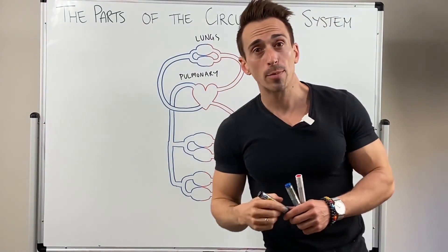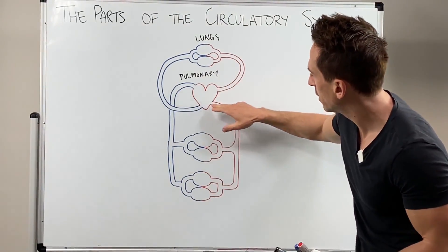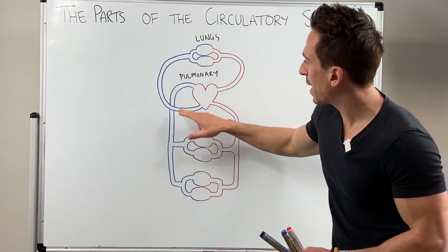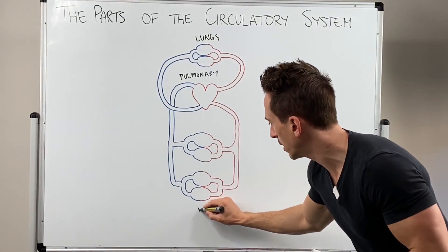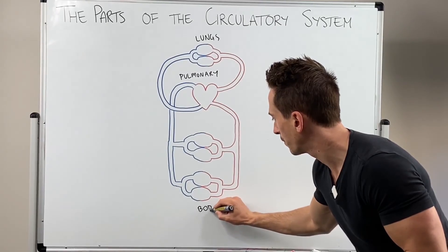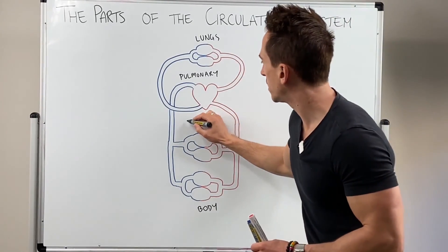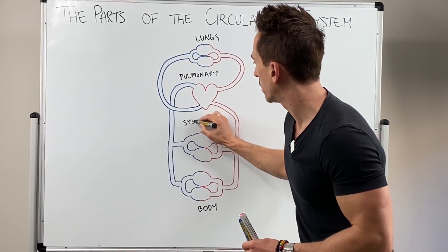And the other type of circulation is going from the heart through to the body and then back to the heart again. So let's write body down here. And this is called the systemic circulation.